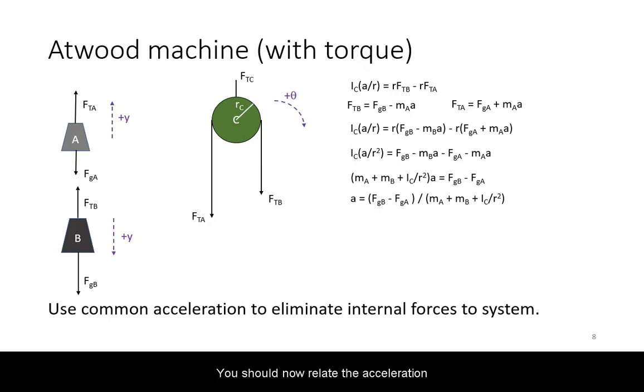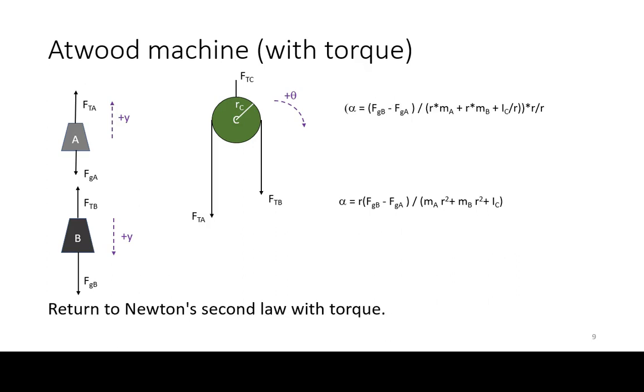You should now relate the acceleration back to the angular acceleration through the no-slip condition. Notice that you can relate this back to Newton's second law with torque. The final equation for angular acceleration is equal to the torque provided by the two masses divided by the total moment of inertia of the system.